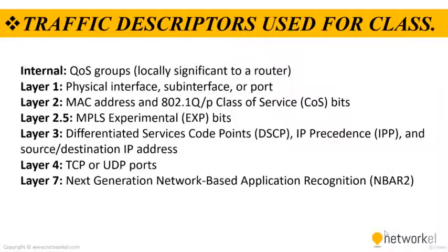For internal QoS groups, these are locally significant to the router. Physical interface, sub-interface, or port — that is for layer 1. MAC address and class of service bits are for layer 2. MPLS EXP bits are for layer 2.5, which is where MPLS actually operates. DSCP, IPP, and source/destination IP addresses are for layer 3. TCP or UDP ports are for layer 4. Next-generation network-based application recognition, which is NBAR2, is for layer 7.